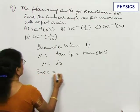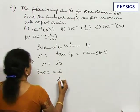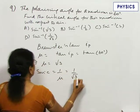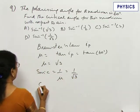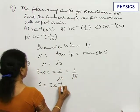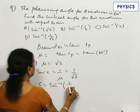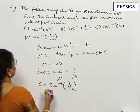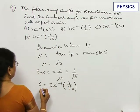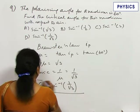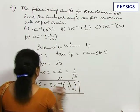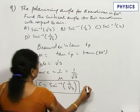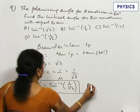Sin C is 1 by mu, which is 1 by root 3. Therefore, C equals sin inverse of 1 by root 3. The critical angle equals sin inverse of 1 by root 3. Option A.